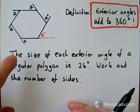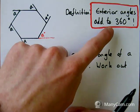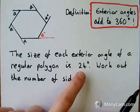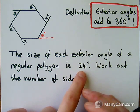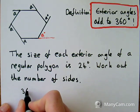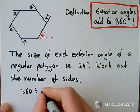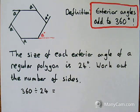So I know that all of these angles, all of the exterior angles, are going to add up to 360 degrees. And each of those angles, because it's a regular polygon, they're all the same, each of those angles is 24 degrees. So I can do 360 divided by 24 to give me how many sides I have.